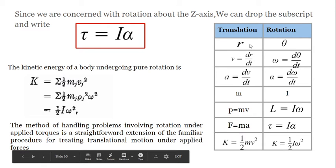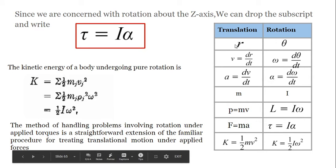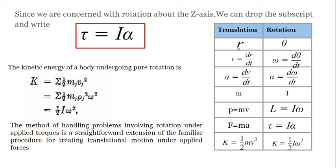Now we have a comparison of translational motion and rotational motion. In translation, we have the position vector R, and the difference in position vectors R1 minus R2 gives displacement. In rotation, the corresponding quantity is the angle theta. The velocity in translation is dR by dt, and the corresponding angular velocity in rotation is d(theta) by dt. Linear acceleration is dv by dt, the second derivative d²r by dt², and the corresponding angular acceleration is d(omega) by dt, or d²(theta) by dt².